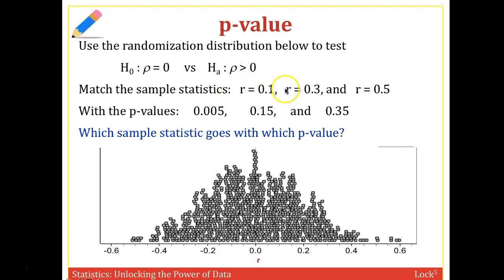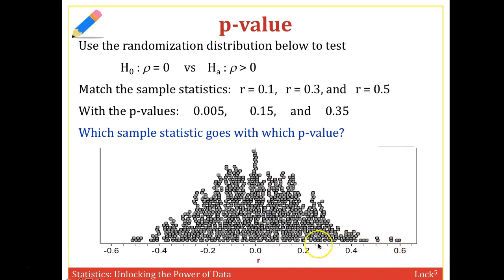For R equals 0.1 on this randomization distribution, 0.1 is right around here. The p-value is the proportion of getting this value or more extreme. Since rho is greater than 0, we go to the right. The proportion from 0.1 or more extreme is your p-value, which is probably about a third, or about 0.35. So R equals 0.1 gives a p-value of about 0.35 — a fairly high likelihood of about 35%.